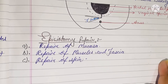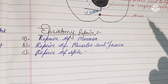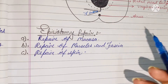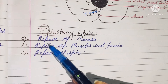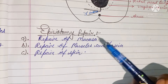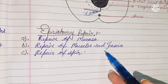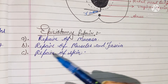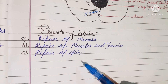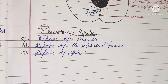Now moving to episiotomy repair. After the episiotomy is done, the repair proceeds in three steps: first, repair of the mucosa; second, repair of the muscles and fascia; and third, repair of the skin.